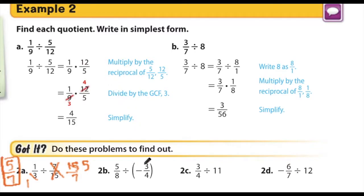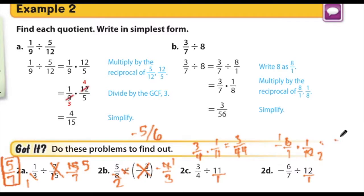For 2b, 5 eighths divided by negative 3 fourths is the same thing as 5 eighths times negative four thirds. I can cancel 4 and 8. 5 times negative 1 is negative 5. 2 times 3 is 6 in the denominator. Remember, if you have a whole number to put that over 1, that might help you with finding the multiplicative inverse. For 2c, we have 3 fourths times 1 over 11, which is 3 forty-fourths. And for 2d, we have 12 over 1, so the reciprocal will be 1 twelfth, and we're going to multiply that by negative 6 sevenths. I'm going to cancel here and get negative 1 half.